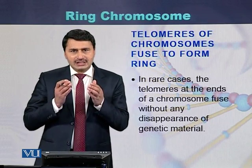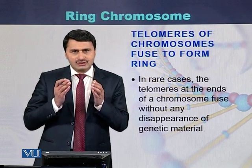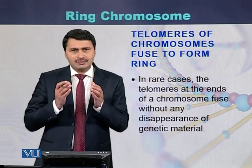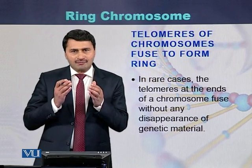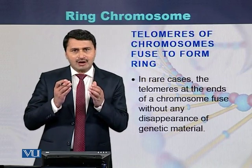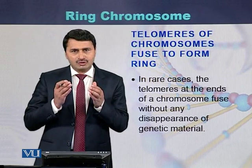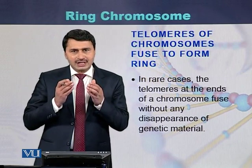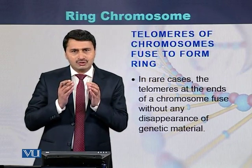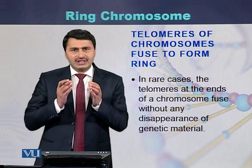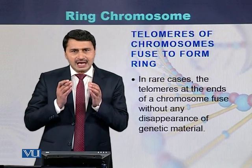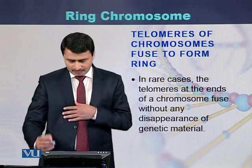Rings can be formed due to deletion of both ends of the chromosome, deletion of one end, or fusion of the chromosome ends even when there is no deletion at either end.